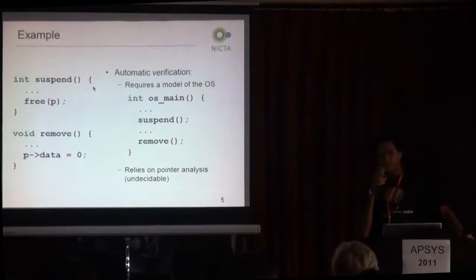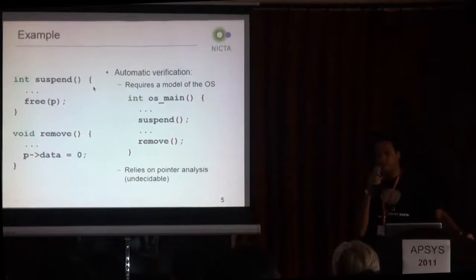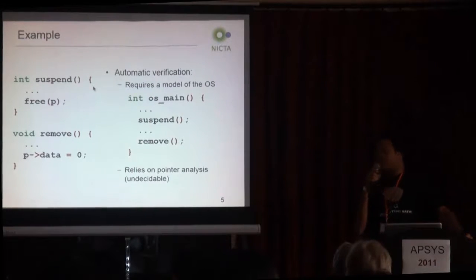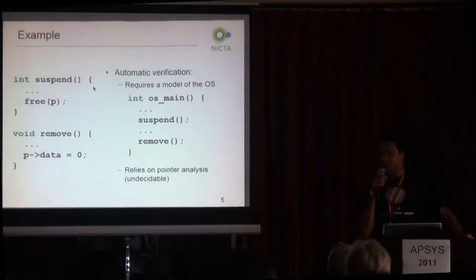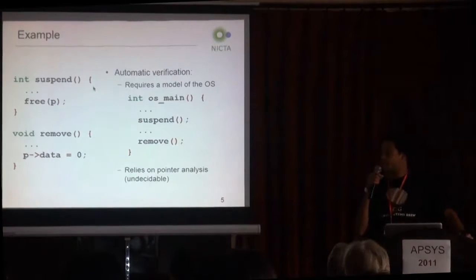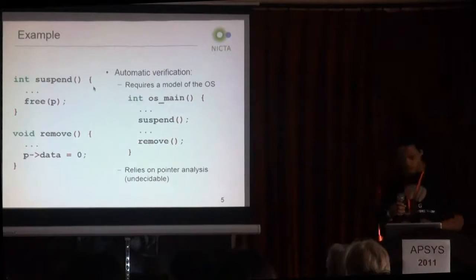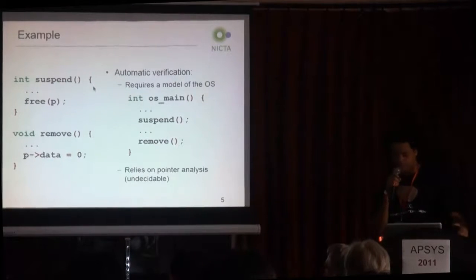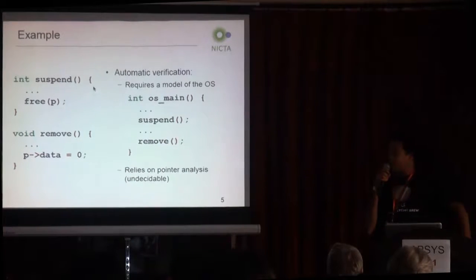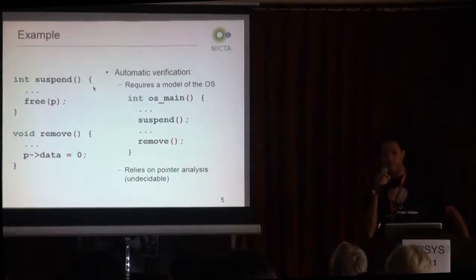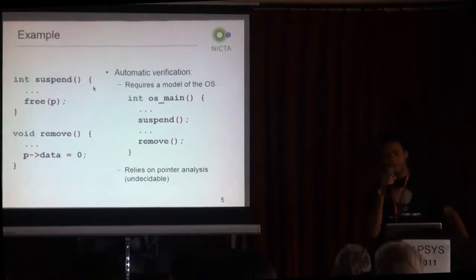This model would randomly try all the possible invocation orderings, and the model checker would do some pointer analysis. In this case, we eventually find that there is an invalid pointer access when remove is called after suspend. But the thing is, in this example it's very simple, but if we had a slightly more complex example with some non-trivial memory manipulation, it would be very hard for the model checker.